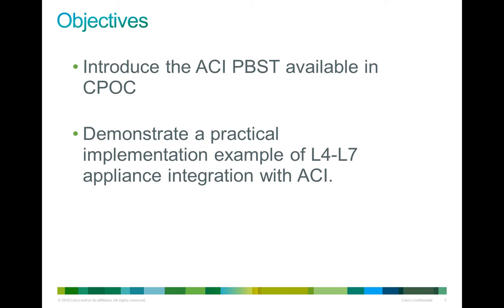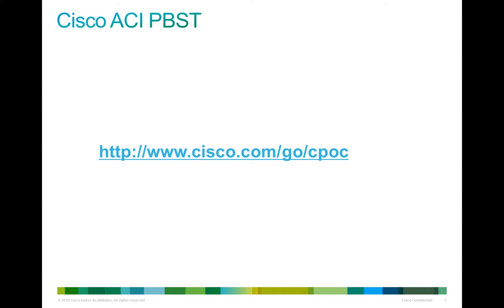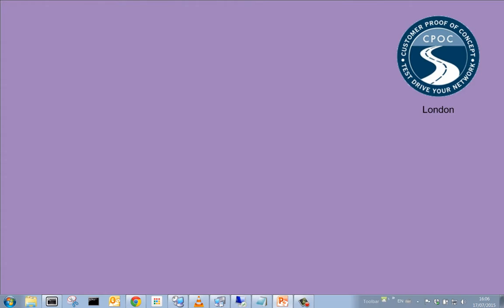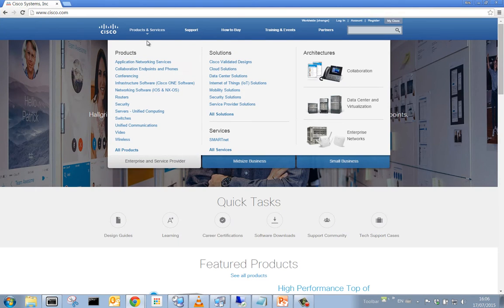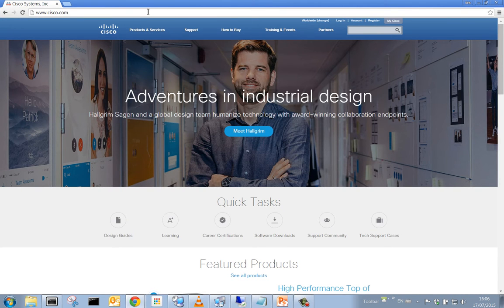This is going to be a practical demonstration of how a layer 4 to layer 7 appliance integration looks like with Cisco's application-centric infrastructure. To start with, we're going to show you Cisco's internal website that is part of the CIPOC labs. This is also the best place to start looking into proof of concepts within Cisco, and we'll visit that website to give you an idea of what's available from CIPOC.